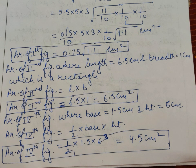Now come to the next figure, that is figure number 2, which is in the form of a rectangle. Length of the rectangle is 1 centimeter and breadth is 6.5 centimeters. The area of the second figure can be found by the formula l × b, so the answer is 6.5 × 1 = 6.5 cm².